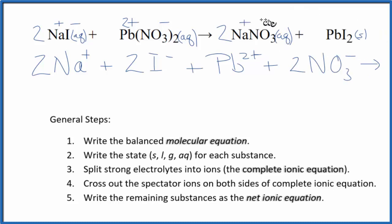For the products, we have 2 sodium ions again, and 2 nitrate ions. Plus we have this PbI2. And since it's a solid, we don't split solids apart in net ionic equations, so we just have PbI2. Now, that's the complete ionic equation.